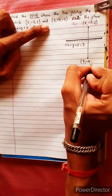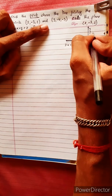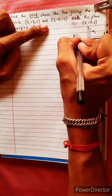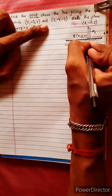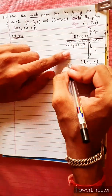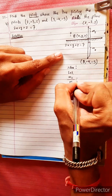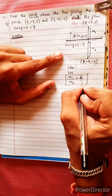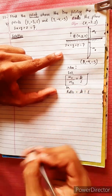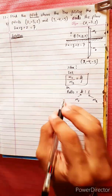The idea is: let m1 by m2 equals to k. So m1 equals k and m2 equals 1. Now let's solve the problem.